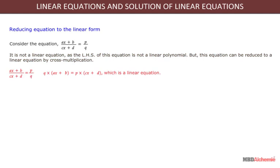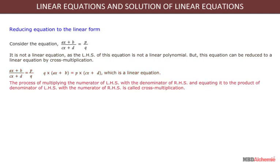It implies Q into AX plus B is equal to P into CX plus D, which is a linear equation. The process of multiplying the numerator of LHS with the denominator of RHS and equating it to the product of denominator of LHS with the numerator of RHS is called cross multiplication.